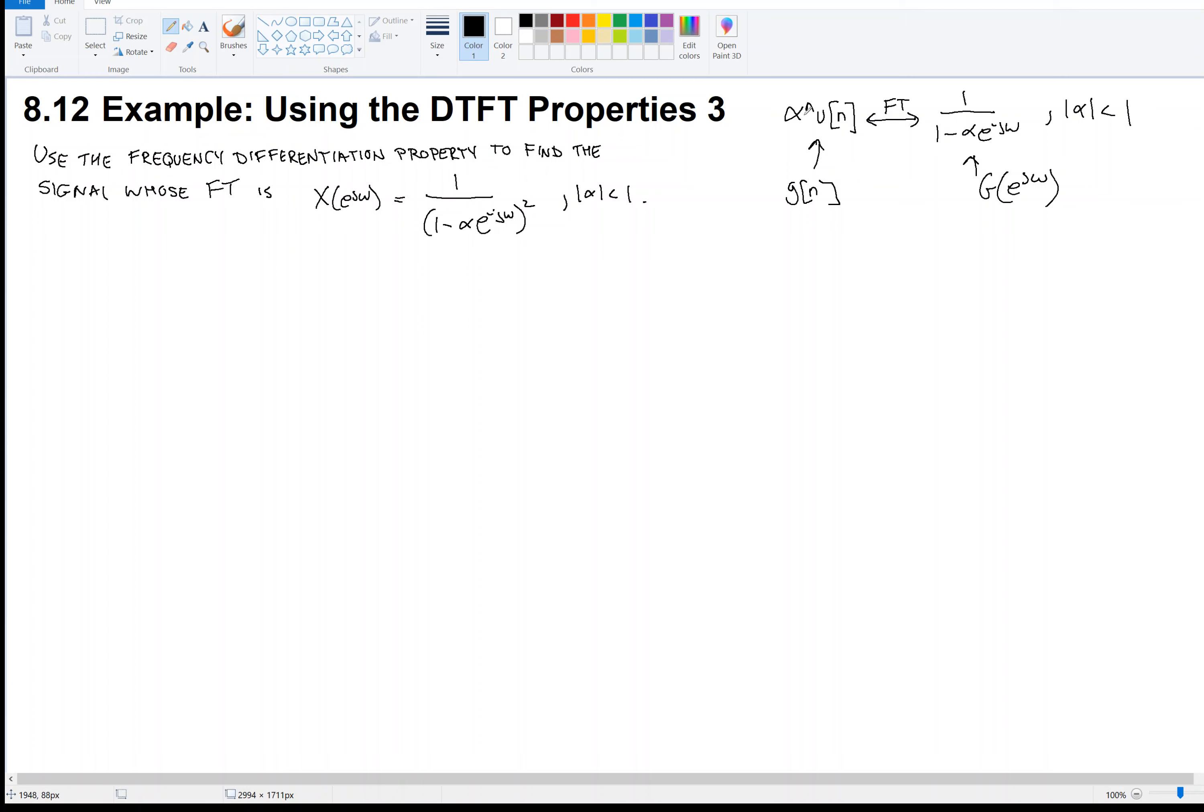Call this signal α^n·u[n], call that g[n], and its Fourier transform capital G. So let's observe first when we take the derivative as instructed in the problem of capital G.